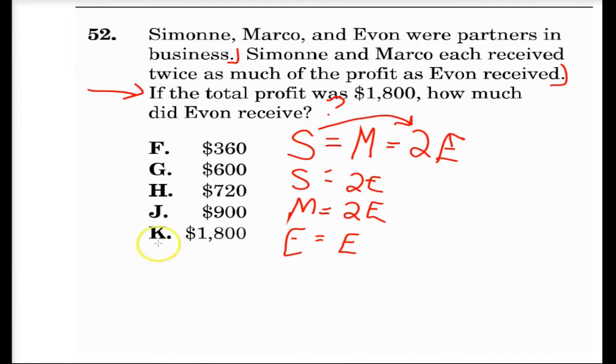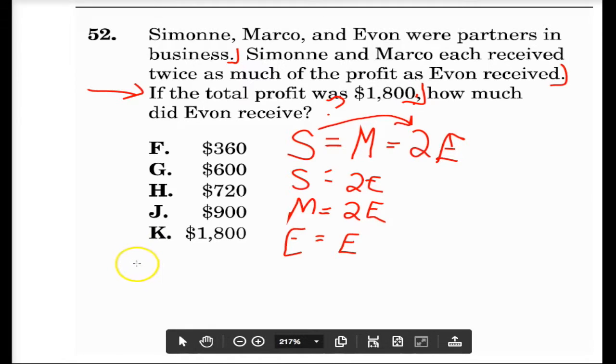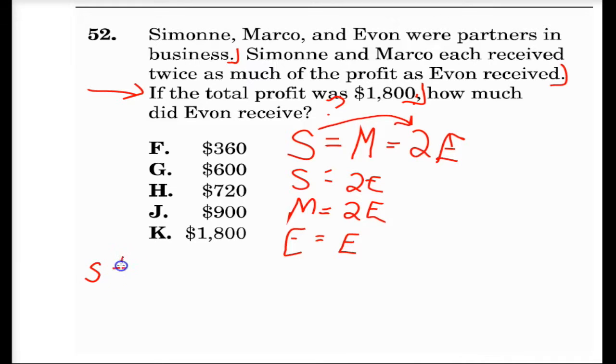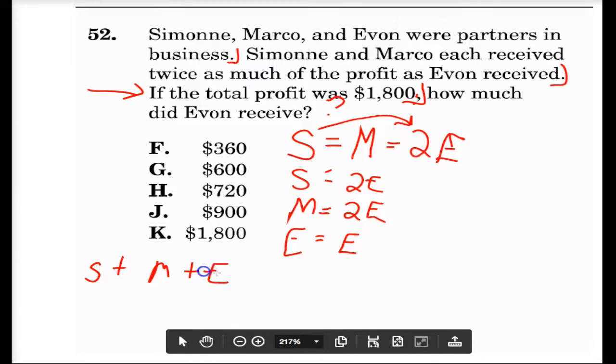If the total profit was $1,800, how much? Well, we don't even care. We're going to stop right at this comma. See what I'm talking about? So the total profit was $1,800. So that means if you add up Simone and Marco and Evan, they're going to equal $1,800.